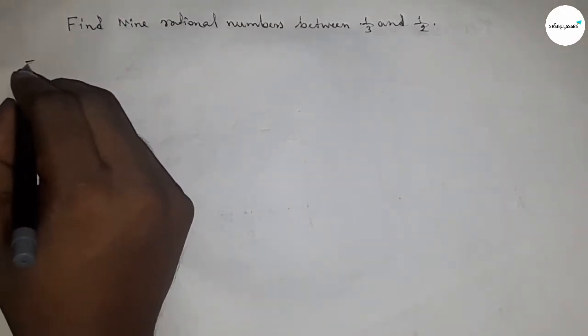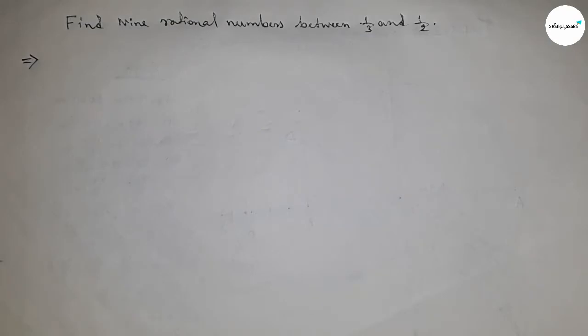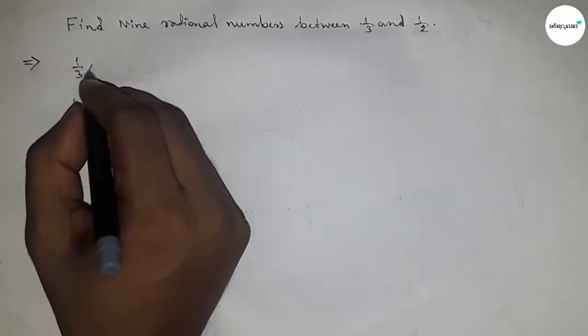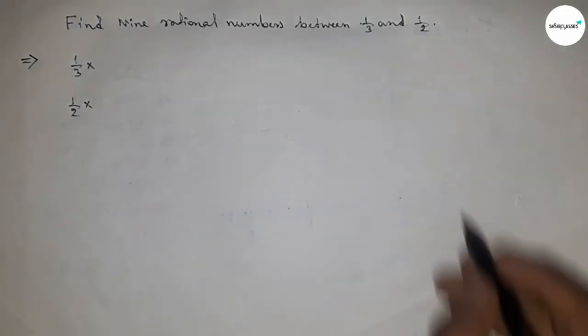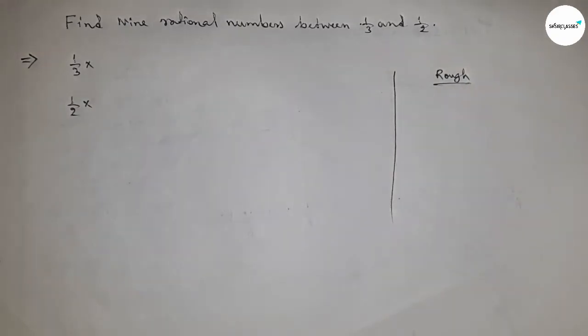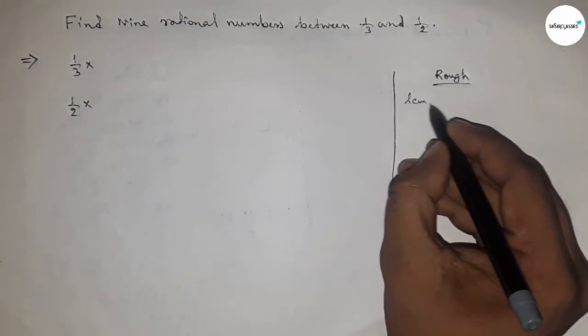start. First of all, write down here the given rational numbers 1/3 and 1/2. What should be multiplying here we will discuss later. So first, roughly discussing some calculation, we have to